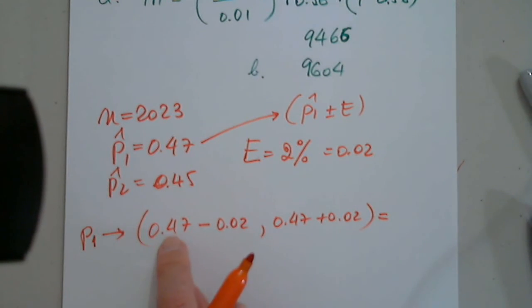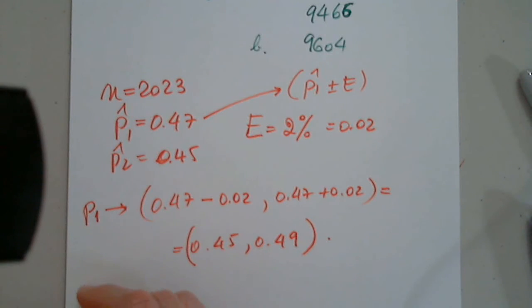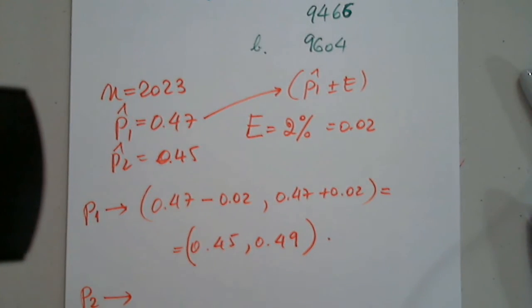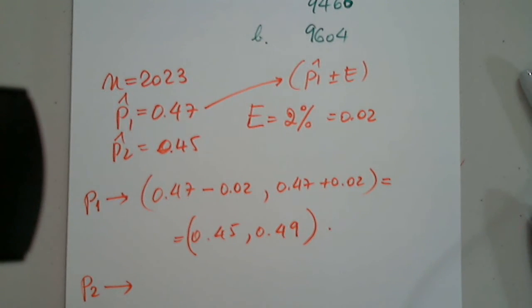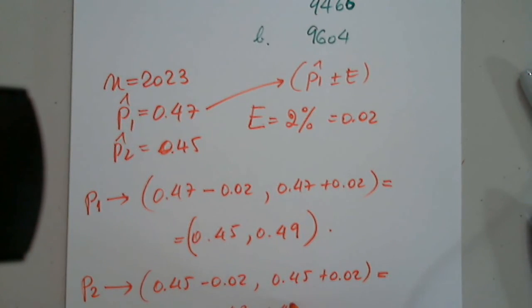Now, 47 minus 2, 47 minus 2 is 0.45. 47 plus 2 is 0.49. So, this is the confidence interval for the first candidate. For the population, for the second candidate, what do we get? So, we have the same thing, but this time it's 0.45 minus 2% and 0.45 plus 2%. So, this is 0.43 and 0.47.